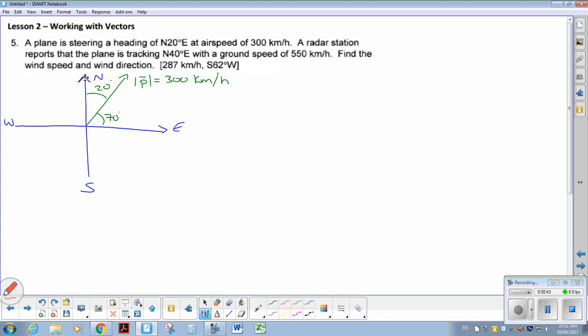Now my wind, no, a radar station reports that the plane is actually, so it's tracking. So that means it's the result. It's actually heading north 40 east. So this is actually what the plane is doing. So it looks like it's doing 550.